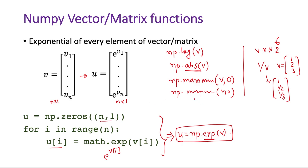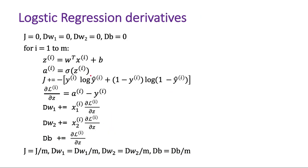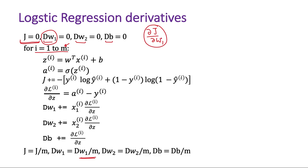Now let's revisit the logistic regression derivatives calculation example. We had said this is the total cost function calculated at the end of the for loop, where 1 to m denotes m training examples. We had used dw1, dw2, and db as accumulators for calculating del J over del w1. This accumulates values for all m training examples, and finally we divide by m to get the average.